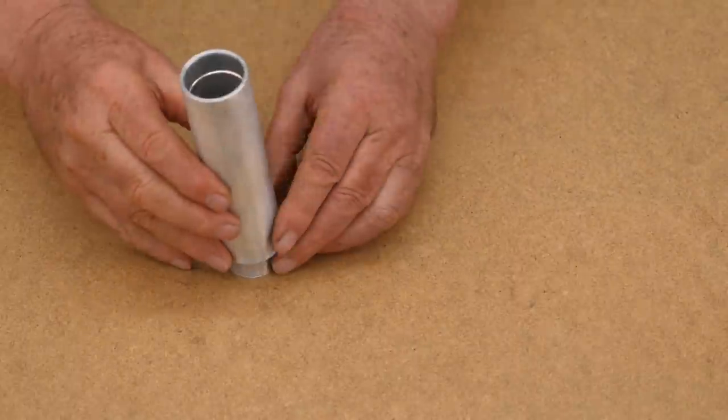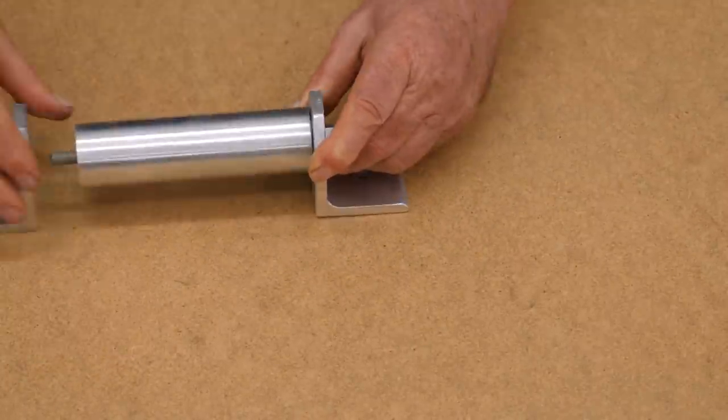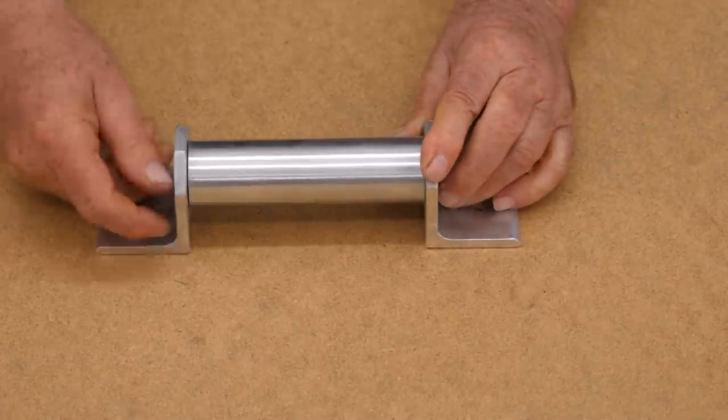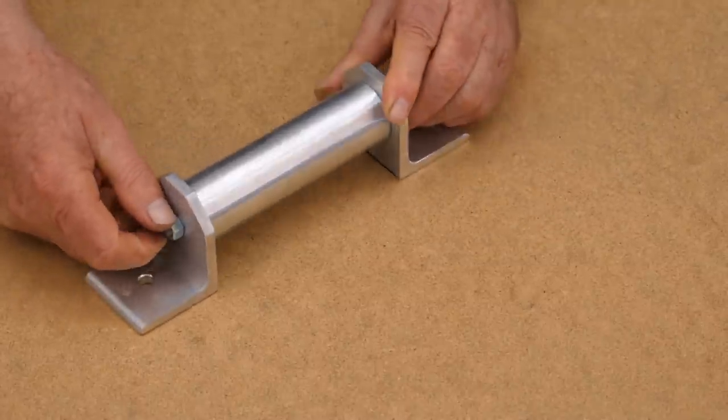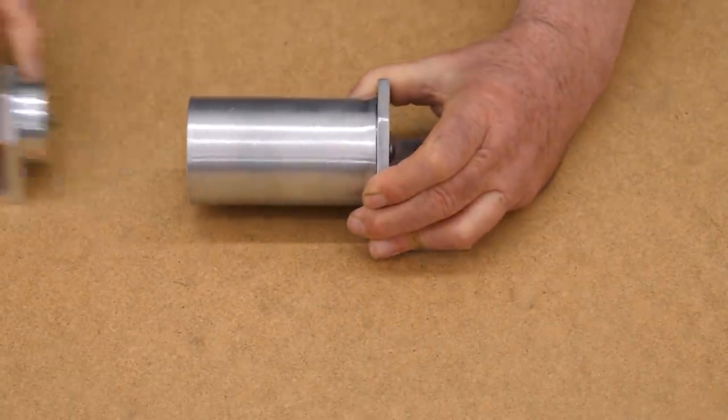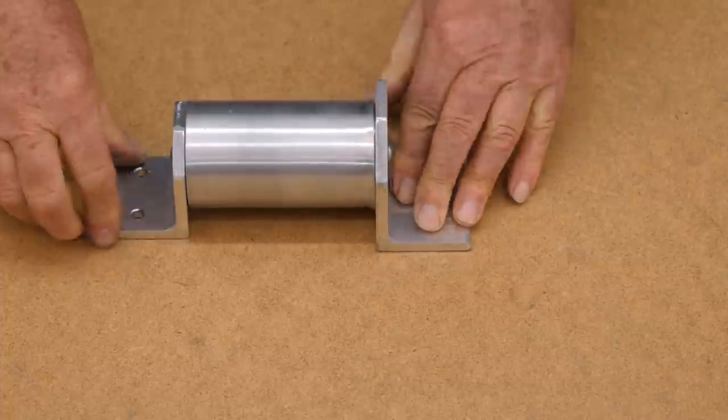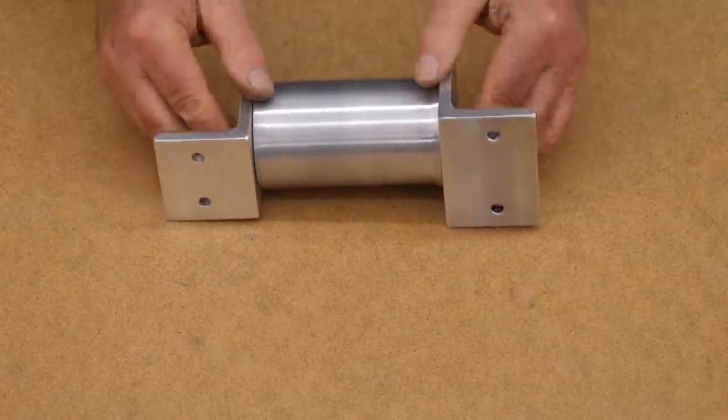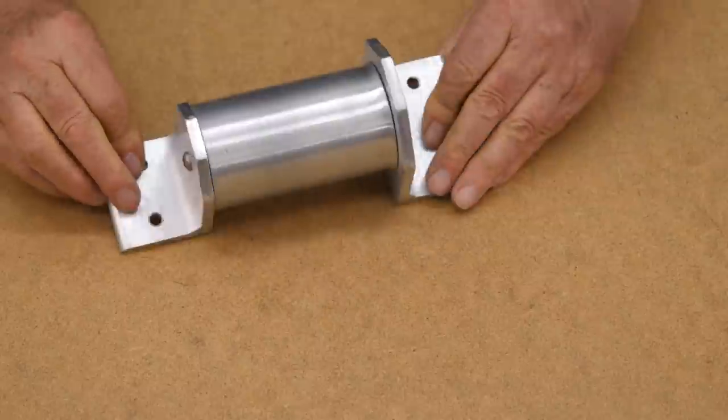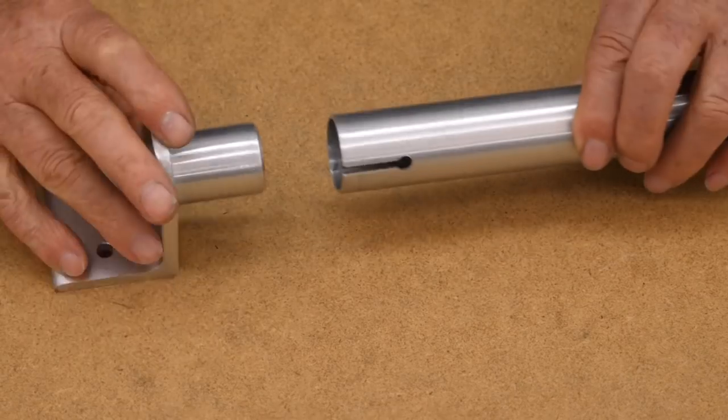The head tube is located by angle brackets which keep it on center with the other components. The housing for the rear shock is supported by angle brackets too, and this is the bracket for the seat tube.